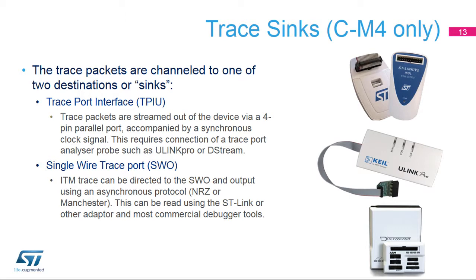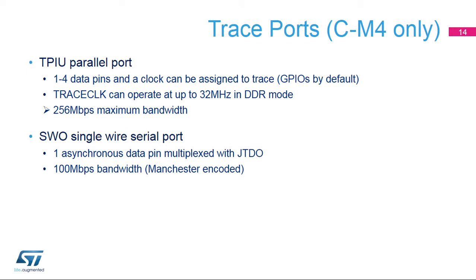The single-wire trace port, or SWO, is available from all STM32WB packages. The trace port width can be programmed from 1 to 4 pins. The bandwidth scales proportionally to the number of pins and the trace CLK frequency, selectable via a divider in the RCC. By applying filters and triggers to the trace sources — ETM notably — the average amount of trace data can be reduced, allowing a lower clock rate or reduced number of pins.